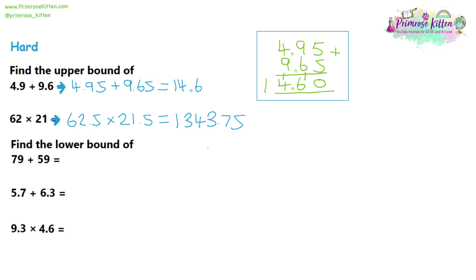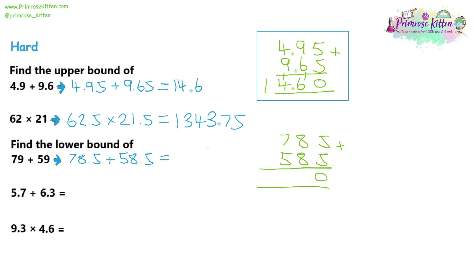Moving on to question three: we find the lower bound of 79 plus 59. Again, these are whole numbers, so a good bet is they're rounded to the nearest whole number. For the lower bound, we go 0.5 below each: 78.5 plus 58.5. Column addition: 5+5=10 carry 1; 8+8+1=17 carry 1; 7+5+1=13 carry 1. The final answer is 137.